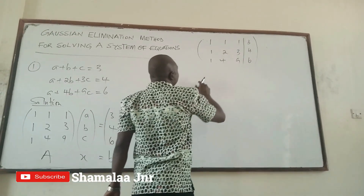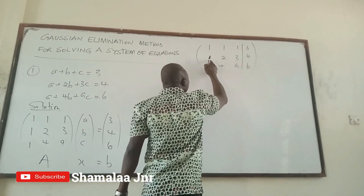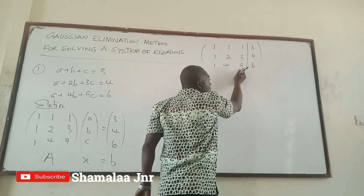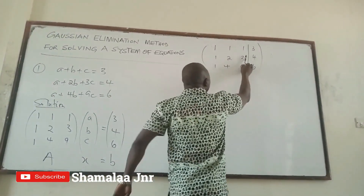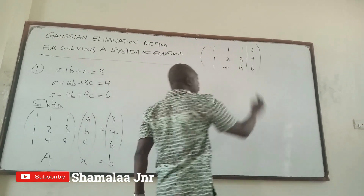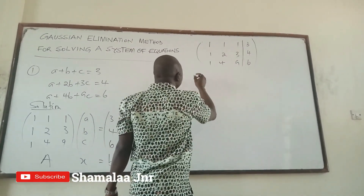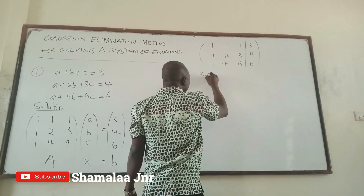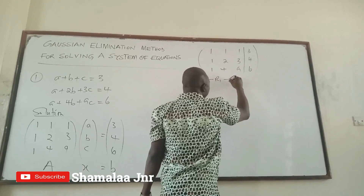The top-left entry is already 1, so we won't touch it. We need to transform the left-hand side into an upper triangular matrix — making the entries below the diagonal zeros. To do row 2, we say: row 2 minus row 1 gives us the new row 2. And for row 3, row 3 minus row 1 gives us the new row 3.